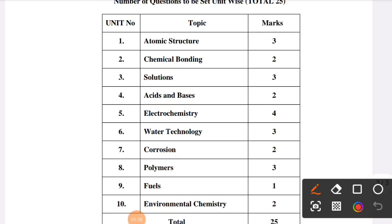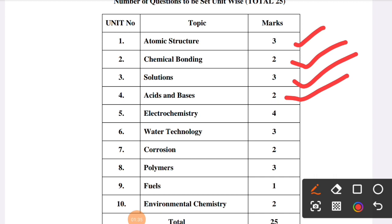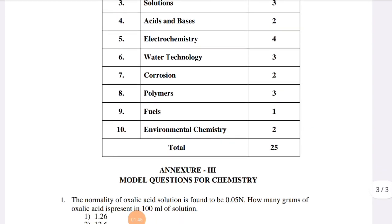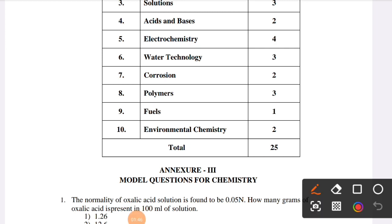Chemistry topic-wise marks weightage: atomic structure - 1 mark, chemical bonding - 2 marks, solutions - 3 marks, acids and bases - 2 marks, electrochemistry - 4 marks, water technology - 3 marks, corrosion - 2 marks, polymers - 3 marks, fuels - 1 mark, environmental chemistry - 1 mark. Total: 25 marks. These are the 10 chemistry topics and their mark weightage.